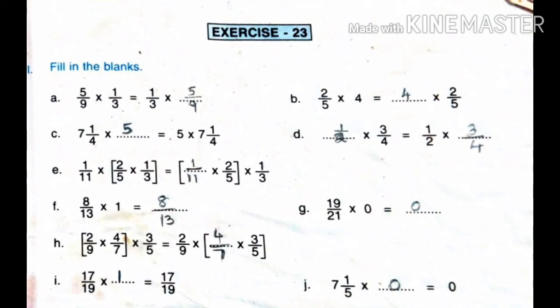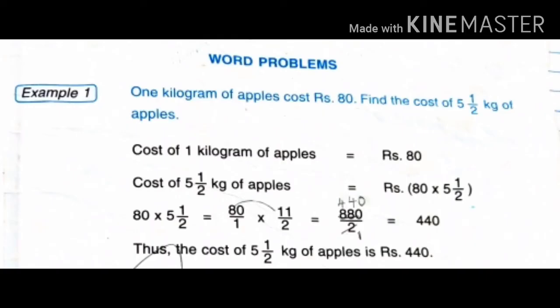Today, I am doing a word problem — Example 1, page number 63. 1 kg of apples costs Rs. 80. Find the cost of 5 and 1/2 kg of apples. Solution: Cost of 1 kg of apples is Rs. 80. So, cost of 5 and 1/2 kg of apples equals Rs. 80 into 5 and 1/2.